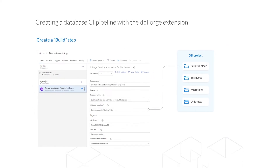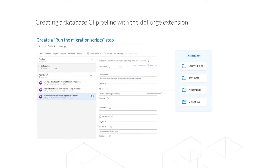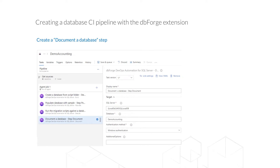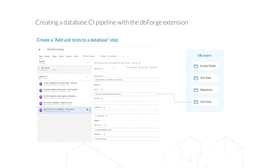Having created the job, you need to fill in all the necessary fields. As you can see from the figure, the project scripts folder is mapped to the subfolder location field. In the same way, add the populate step and fill in the required fields — the data generation project is mapped to the dbForge Data Generator project file field. Then we add the execute step and specify the path to the migrations folder, where the project's migration folder is mapped to the input field. To include the documentation in the NuGet package, add the document step and fill in the appropriate fields — the documentation will be dynamically created for the specified database on the fly. To deploy unit tests on the database, add the execute step again and specify the unit test folder as a source, with the project's unit test folder mapped to the input field.